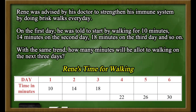The number of minutes he walks every day is also represented by the sequence 10, 14, 18, and so on and so forth, and this is an example of an arithmetic sequence.